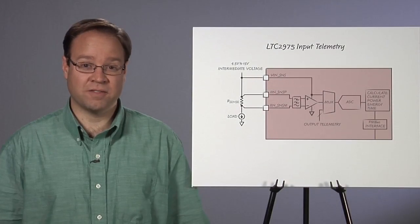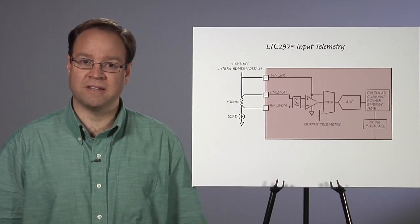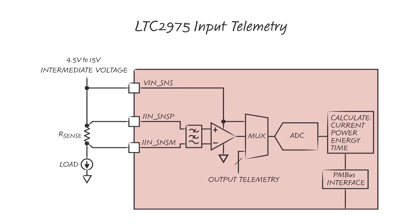The LTC2975 measures input voltage directly with an internal ADC. It reads input current by measuring voltage across an external sense resistor, R-sense, with a unique high-side current sense amplifier that has excellent common mode rejection. Accurate input supply rail current sense measurements with less than 1% error can be made even in noisy intermediate supply voltage environments.